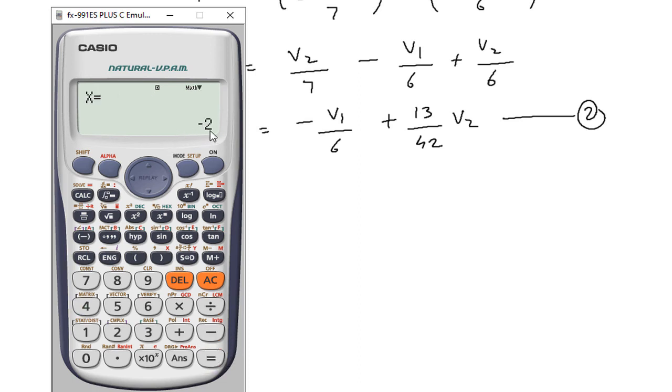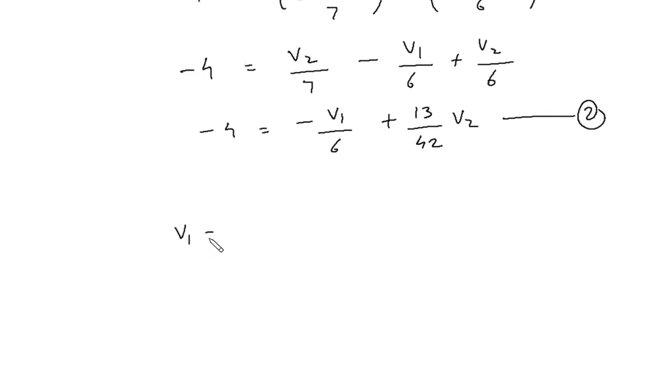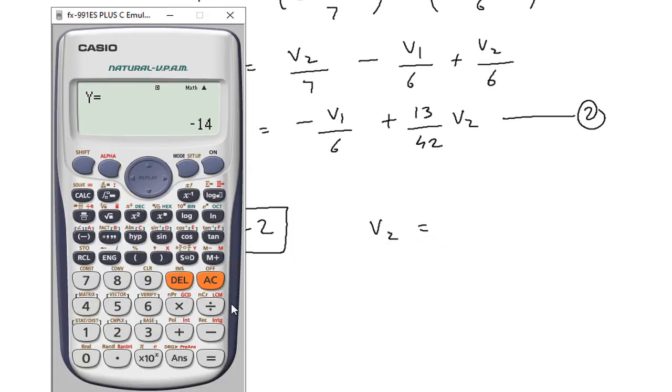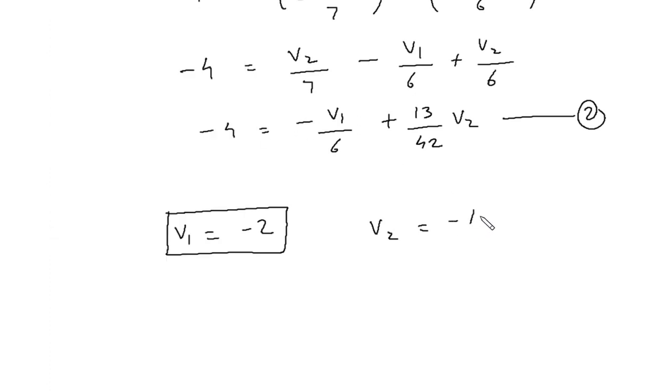So V1 is equal to minus 2 volts, and V2 is equal to minus 14 volts.